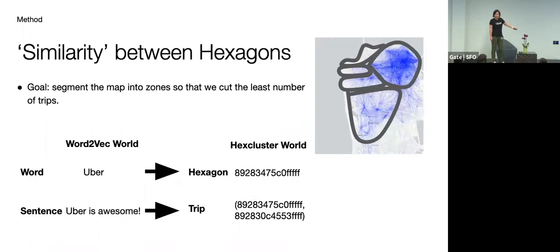Alright, so that's for Word2Vec. How do we really apply this in the hex cluster context? So the problem here is what's similar to a word in our context is really a hexagon. So this is a hexagon UUID. So we regard that as a word in our hex cluster world. And then instead of a sentence, what we have are trips. So here I'm using the restaurant location and then followed by the eater drop-off location.